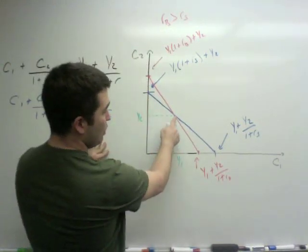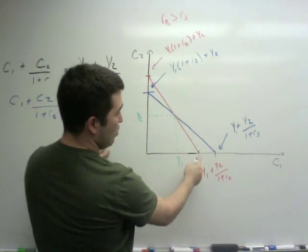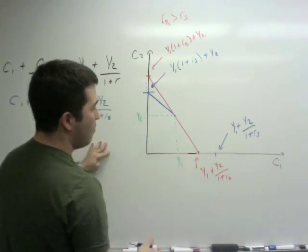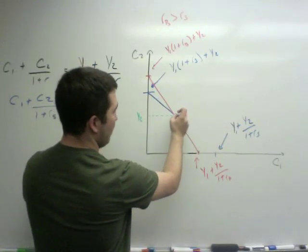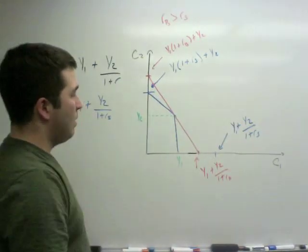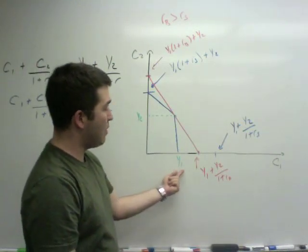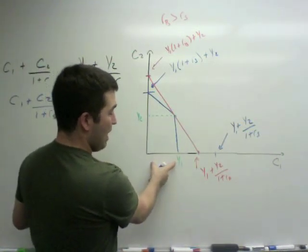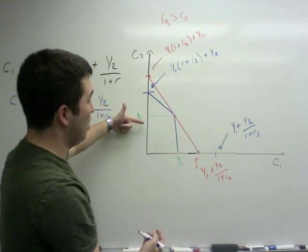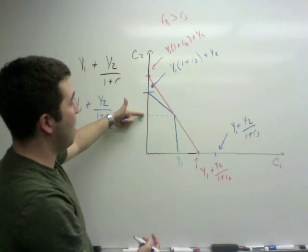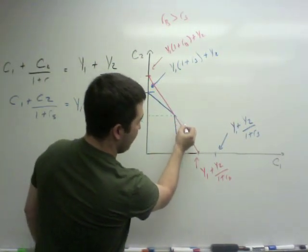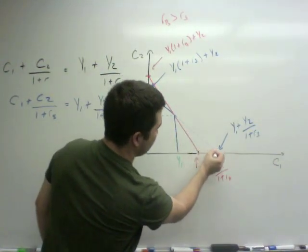Instead of being able to consume any of these values right here, which would be more than your income in period 1, their budget constraint starts to look like this. Because what that's saying is that in period 1, I can consume any value below my income. In period 2, since I have saved, I am able to now consume more than my income that I get in period 2. So anything up here.